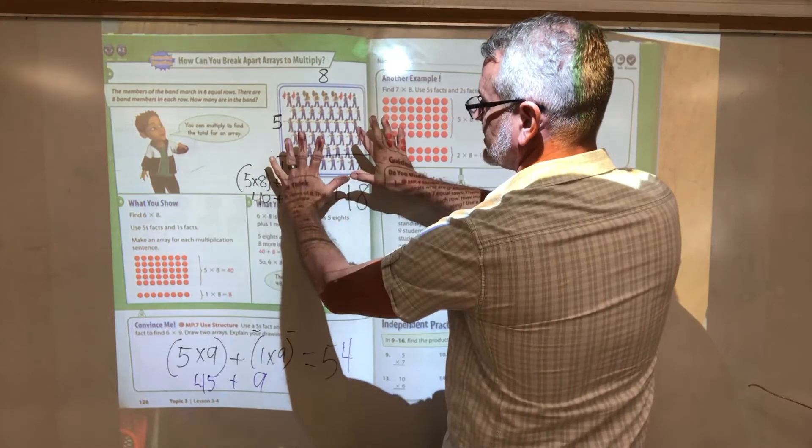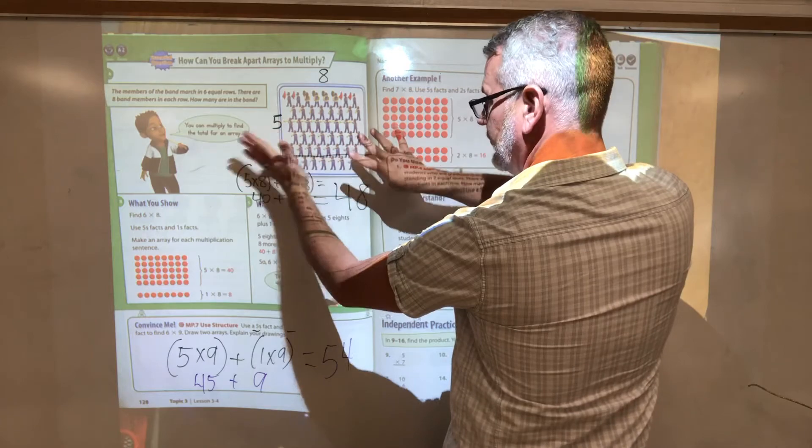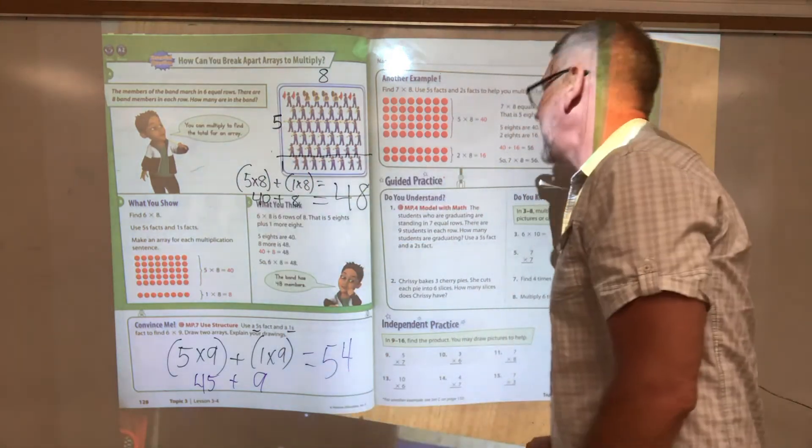Put down finger number six, which is this one. Our tens place is five, our ones place is four, fifty-four. We got it.